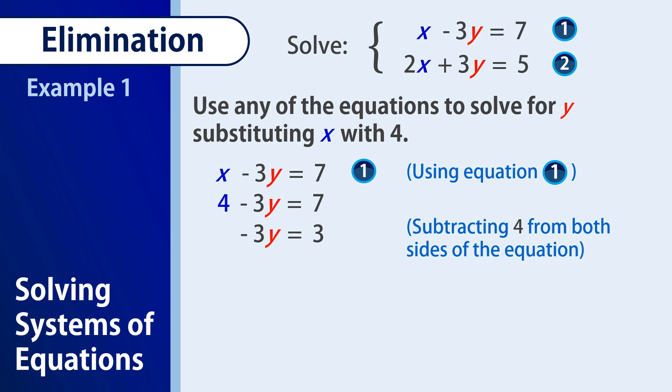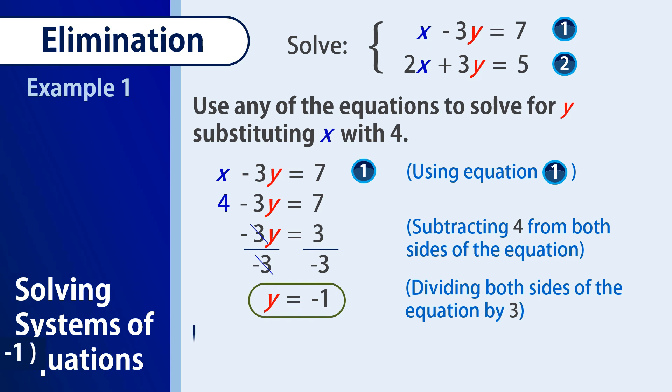We now divide negative 3 to both sides of the equation. We have negative 3 over negative 3 is of course 1. And y is equal to 3 over negative 3 and that is negative 1. And so, our solution set will be 4, negative 1.